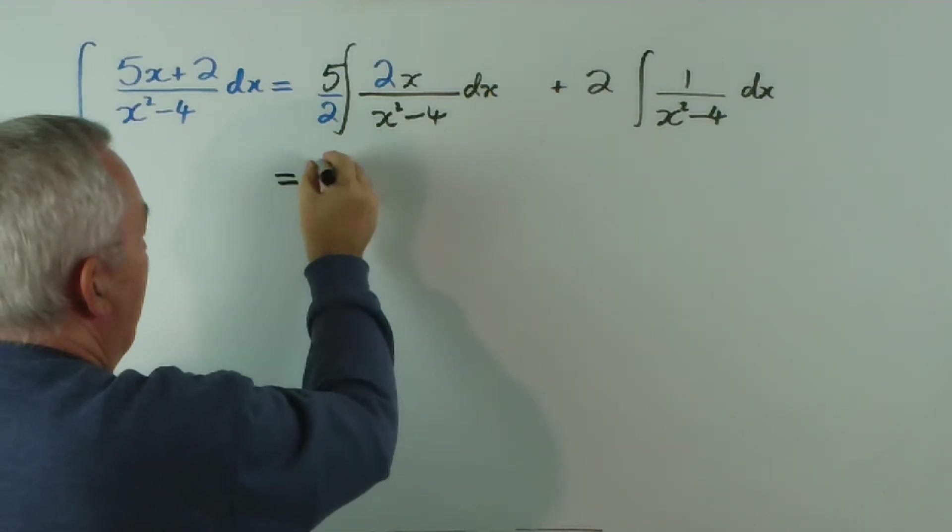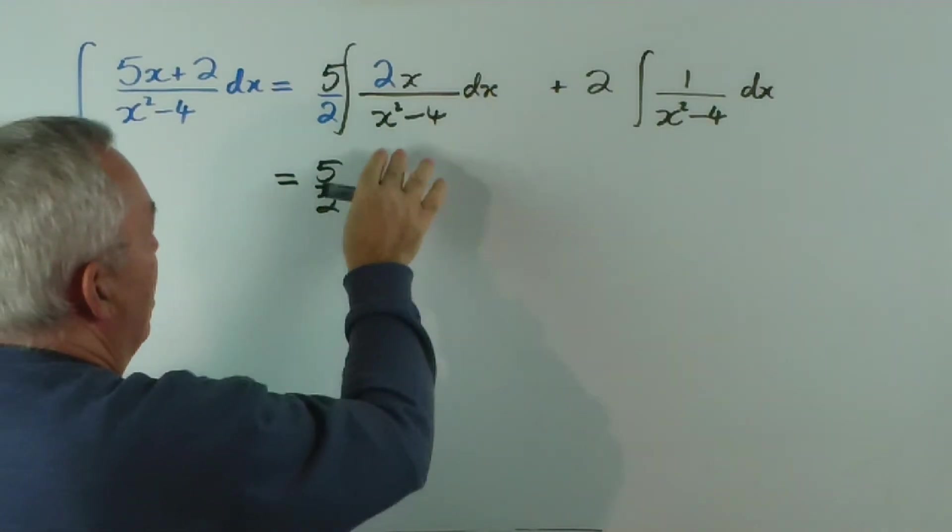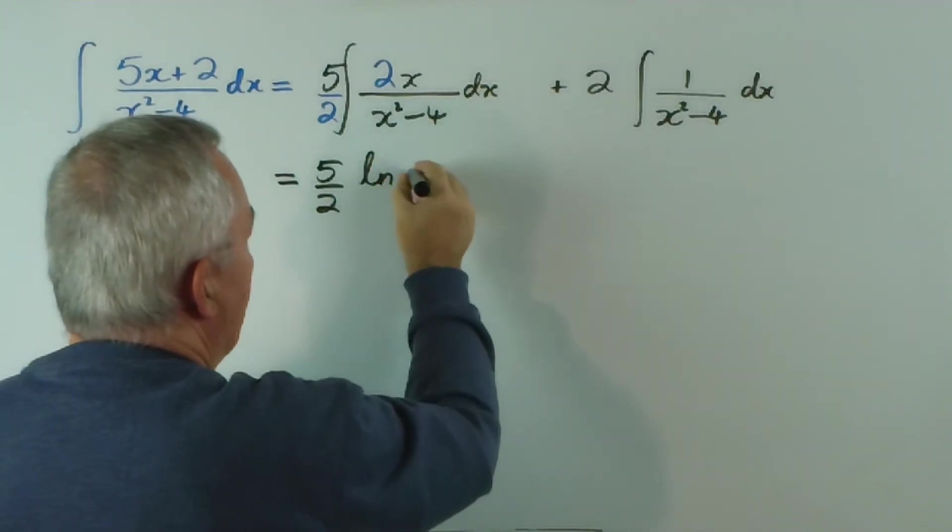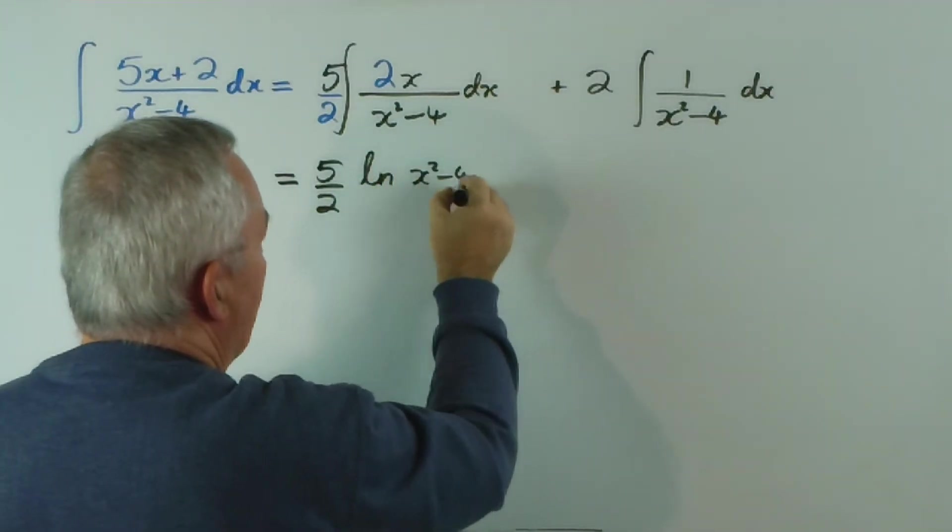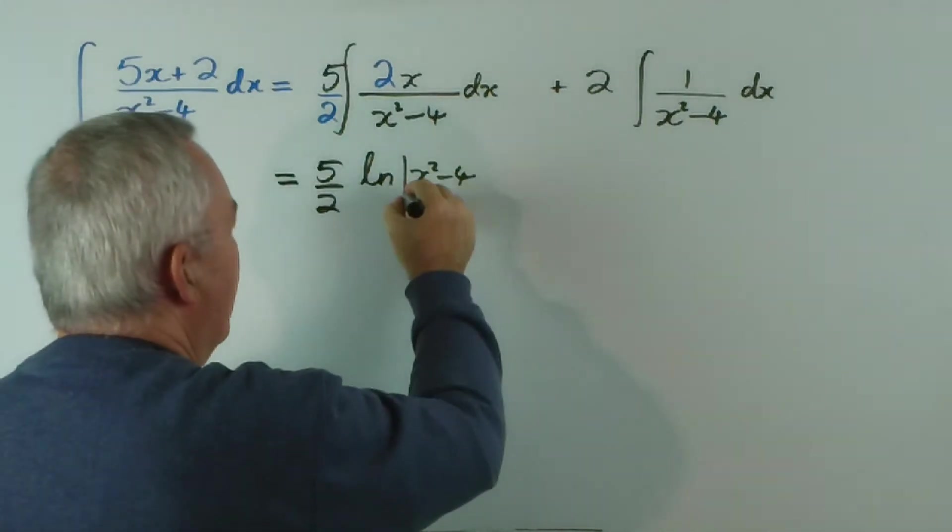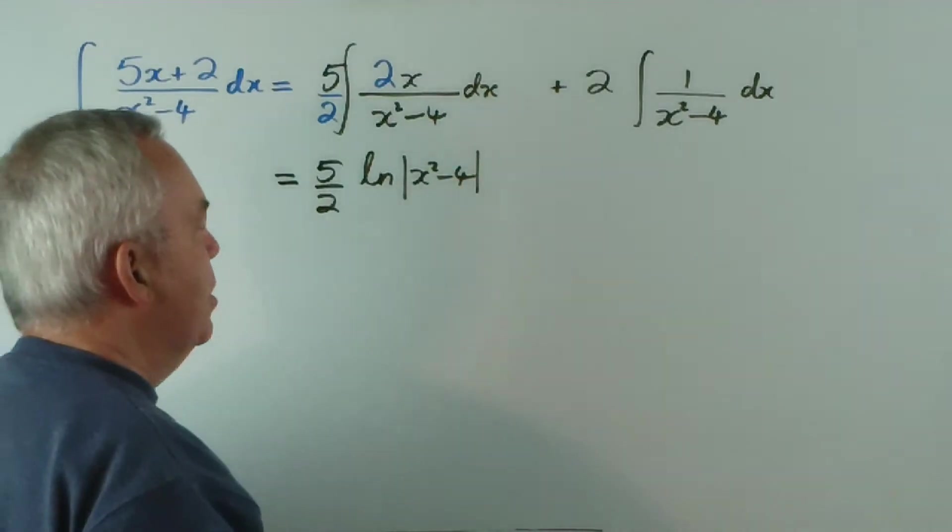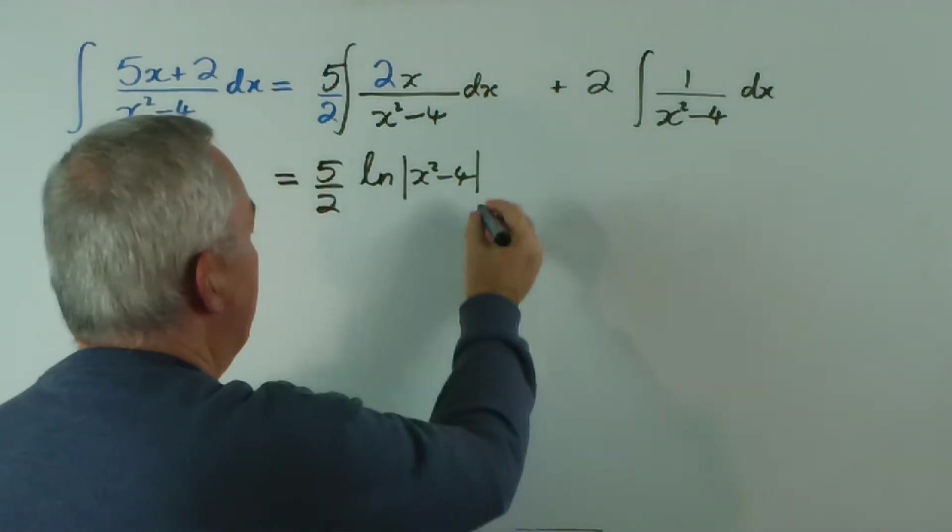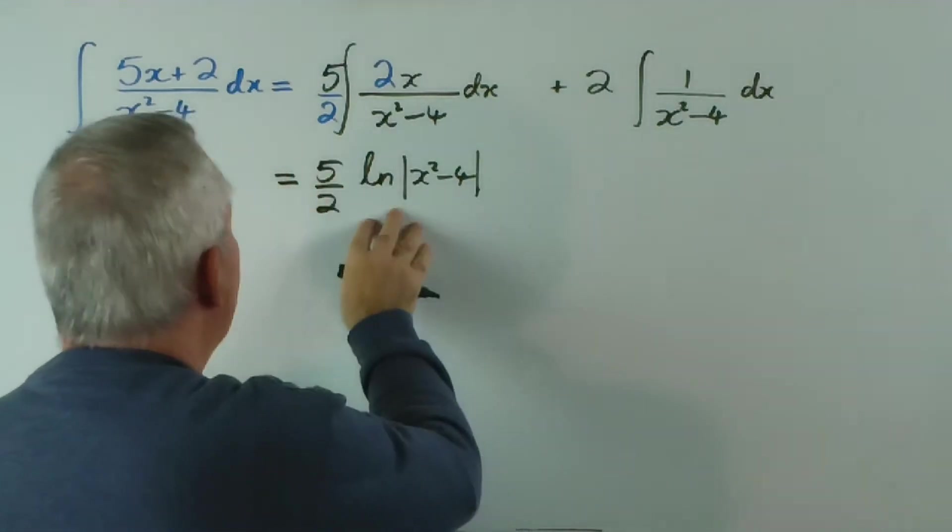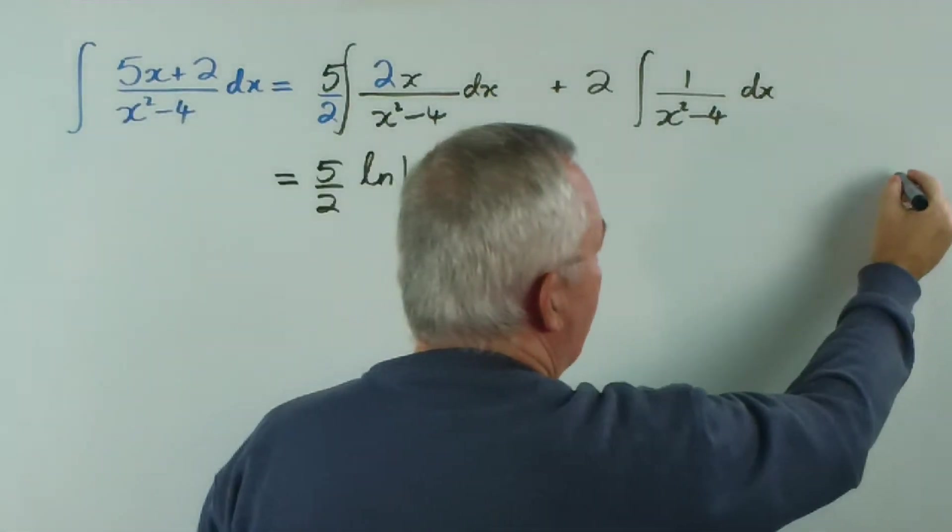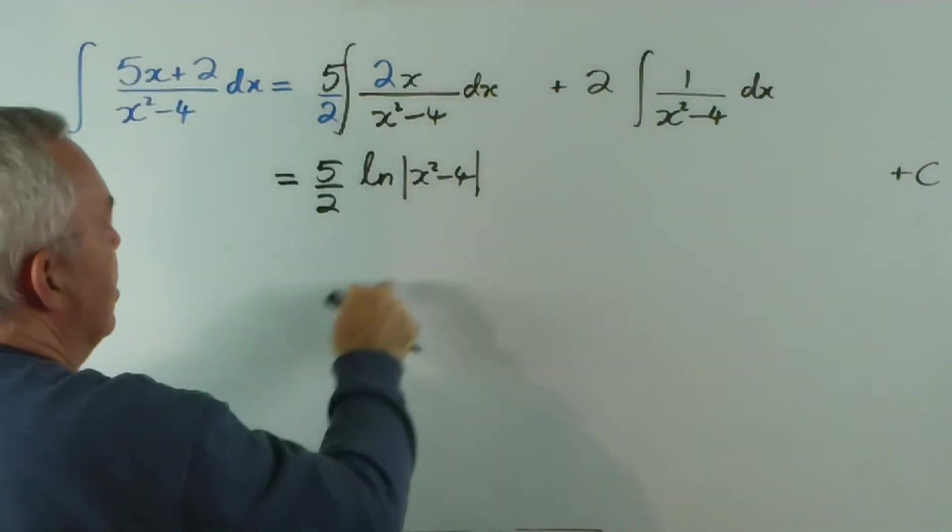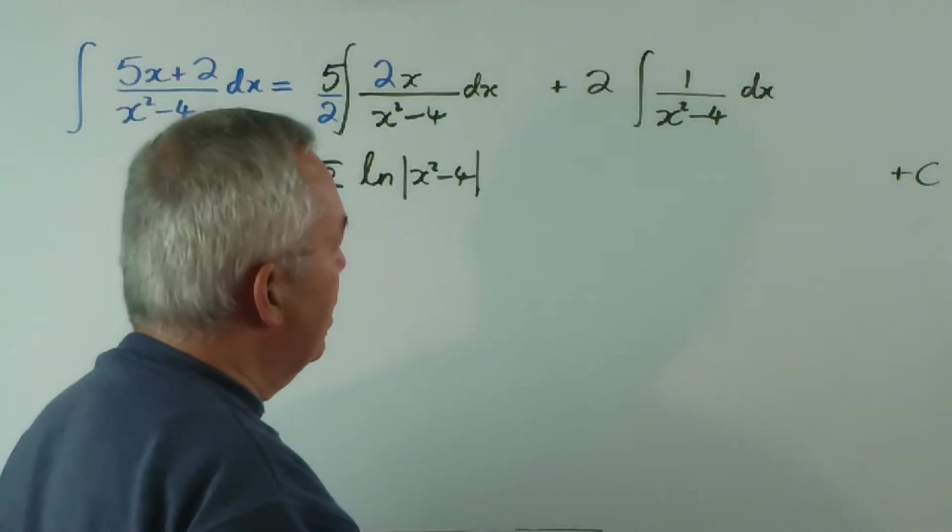So, this, for example, would be 5 on 2. The integral of this would be the logarithm of x squared minus 4. And since x squared minus 4 could conceivably be negative, it is wise for us to use the absolute value. Now, the fact that this has been evaluated means we do need a constant already, because without limits, we don't know the exact value of this.